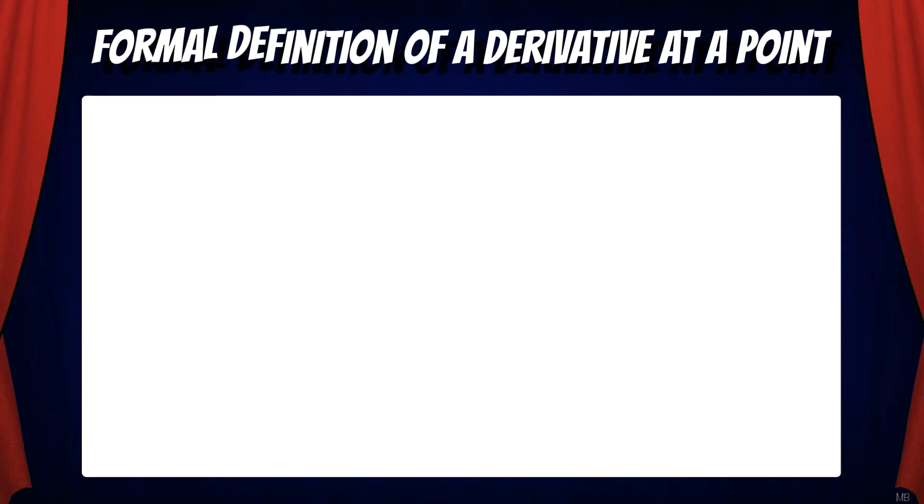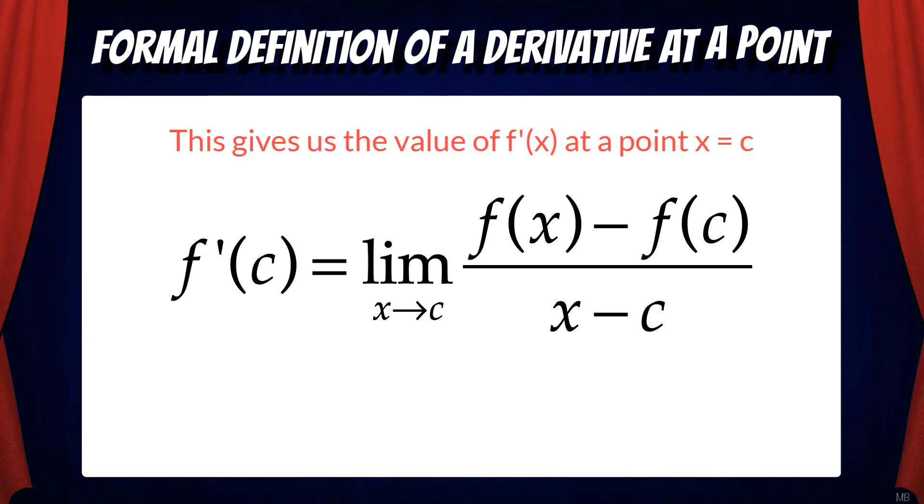Remember this gives us an equation f prime of x that allows us to calculate the derivative at any value of x. Now we're going to learn about the formal definition of a derivative at a point which says f prime of c equals the limit as x goes to c of f of x minus f of c over x minus c. This gives us the value of f prime of x at a point x equals c.